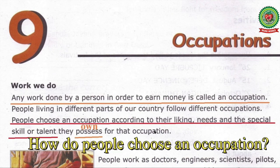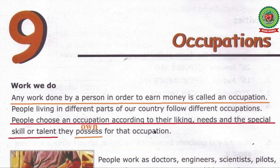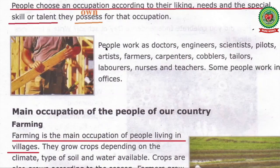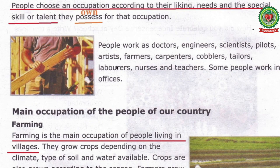How do people choose an occupation? People choose an occupation according to their liking, needs and the special talent. People work as doctors, engineers, scientists, pilots, artists, farmers, carpenters, cobblers, tailors, laborers, nurses and teachers. Some people work in offices.